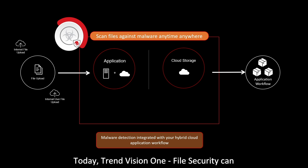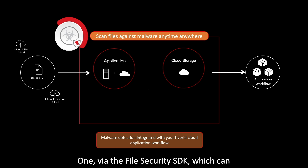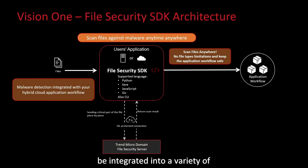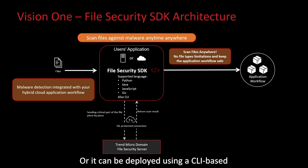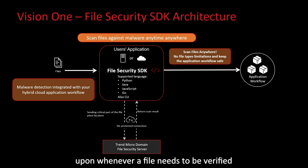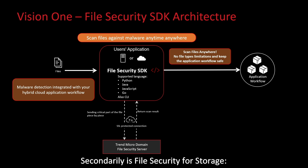Today, Trend Vision 1 File Security can be deployed in two ways. First, via the File Security SDK, which can be integrated into a variety of applications by language, like applications using Java, Node.js, Go, or Python. Or it can be deployed using a CLI-based approach, and then subsequently called upon whenever a file needs to be verified to be non-malicious.